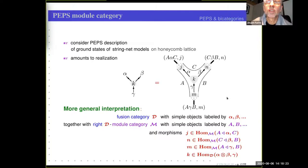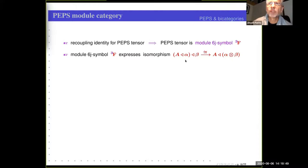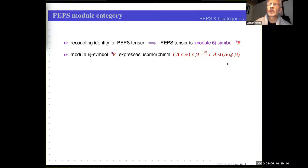There are various orientation choices which are implicit and which I do not show here. In this description, the recoupling identity for the PEPS tensor tells you that the PEPS tensor is what is called a module 6J symbol. Just like the ordinary 6J symbol expresses the isomorphism between two tensor products with different bracketing, the module 6J symbol expresses an isomorphism where we act on an object of the module category first with alpha and then with beta, and compare this to the action of the tensor product of alpha with beta.